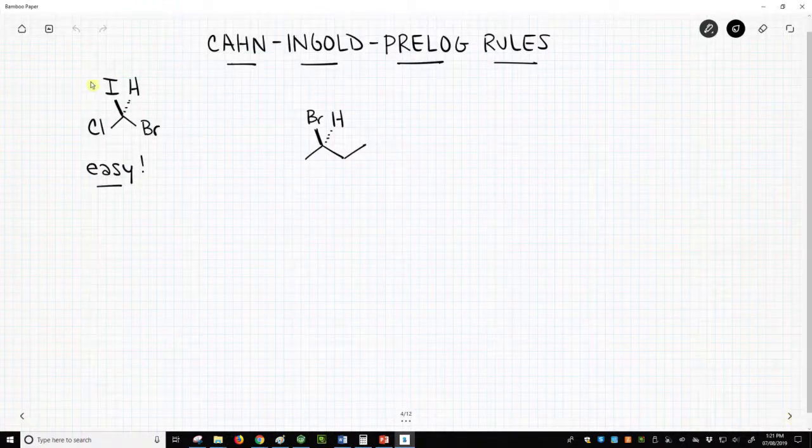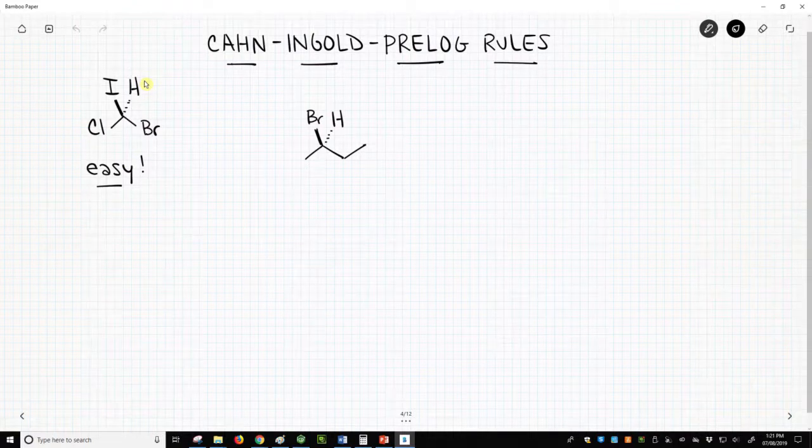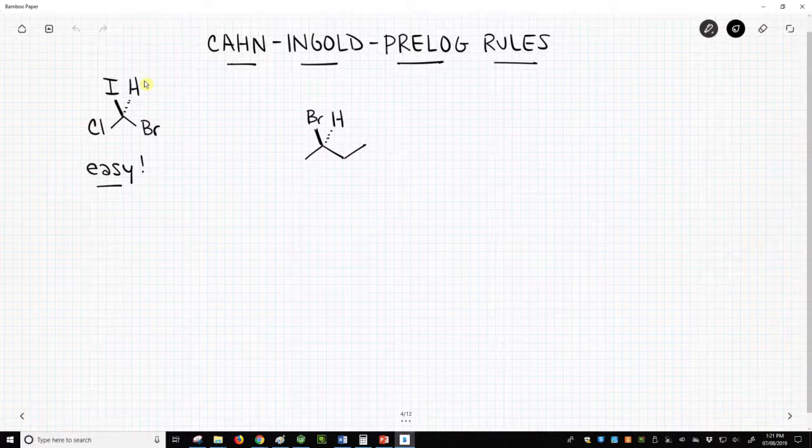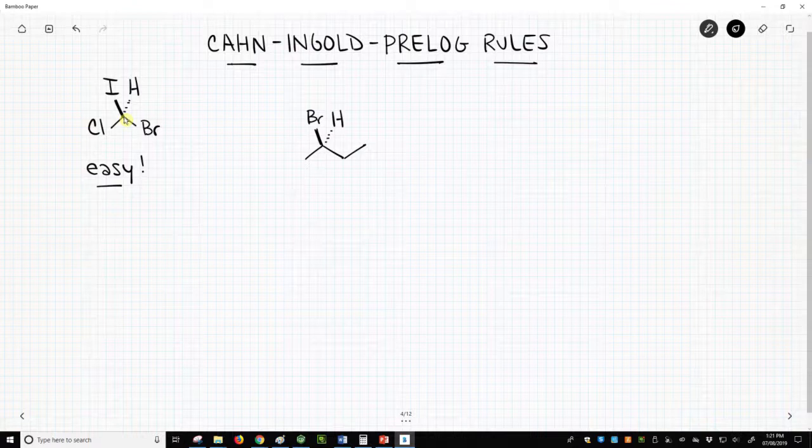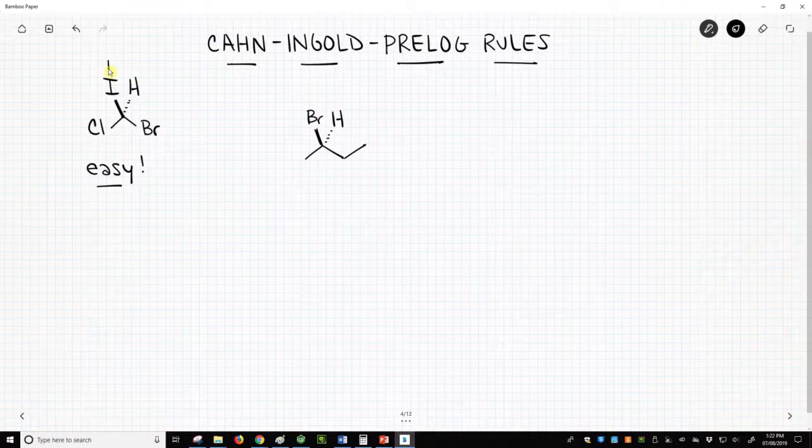So in the upper left, this is a molecule we've seen before if you've watched other videos on this channel. And to assign the stereochemistry, we simply look at the four groups on our stereocenter, our chiral carbon. In this case, this carbon is attached to four different groups. Iodine is highest priority because it has the highest atomic number.